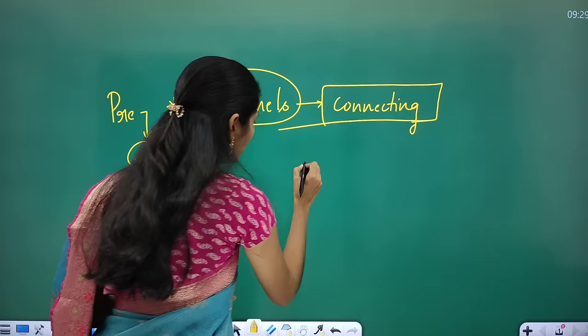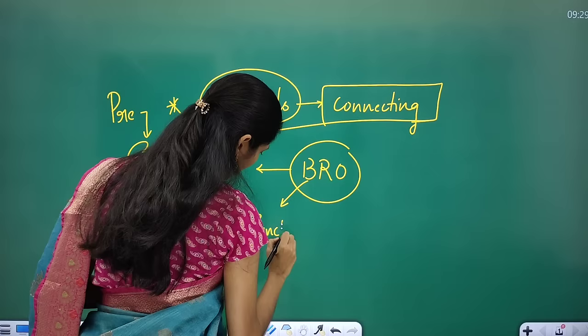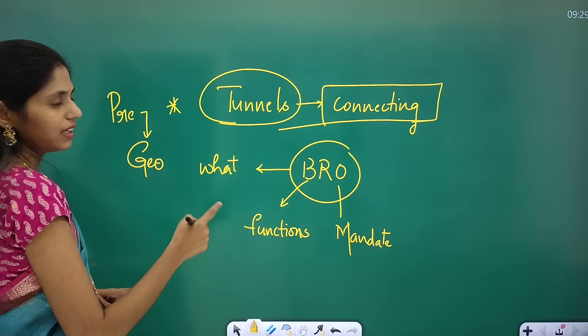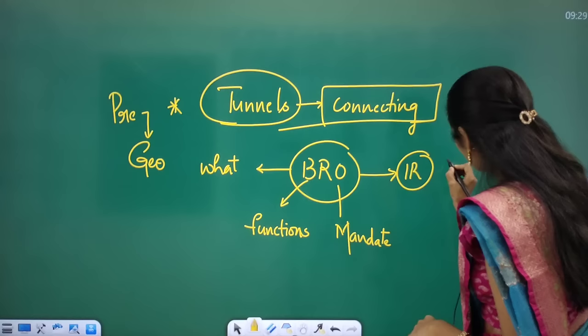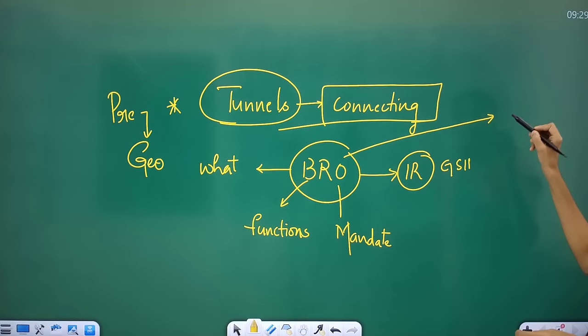You have to know about the Border Roads Organization — what BRO is, what its functions are, and what its mandate is. This topic is important from international relations, which comes in GS Paper 2. BRO is related to international relations because this organization is responsible for the development of roads at international borders.